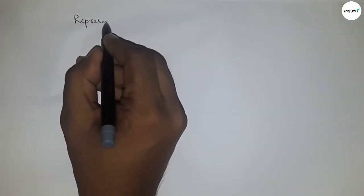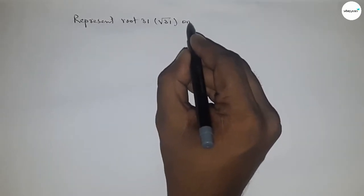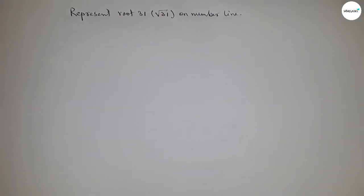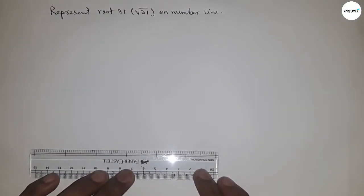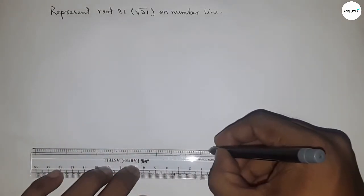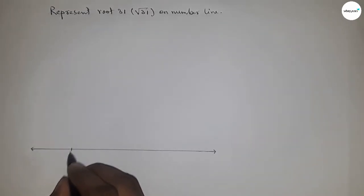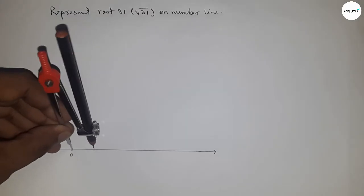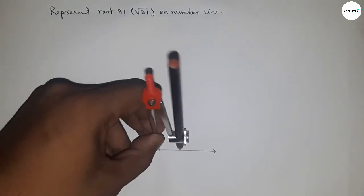Hi everyone, welcome to SSR Classes. Today we are going to represent root 31 on the number line. Let's start by drawing a number line — draw a line of any length, mark the ends with arrows, and mark the starting point as zero. Then take any length by compass and mark the numbers on the line; this length is called unit length.